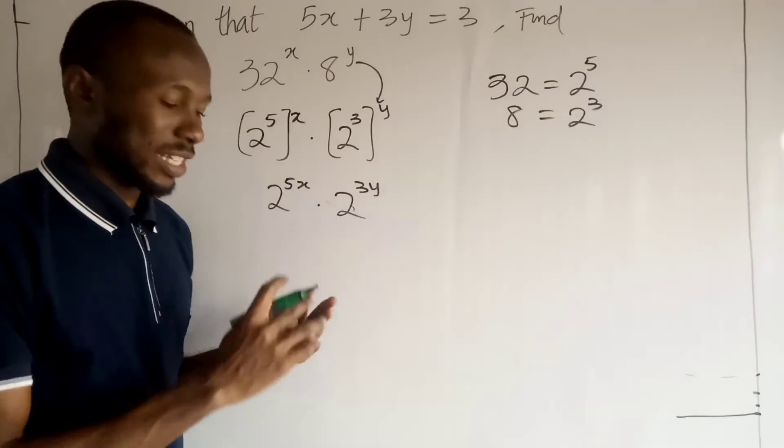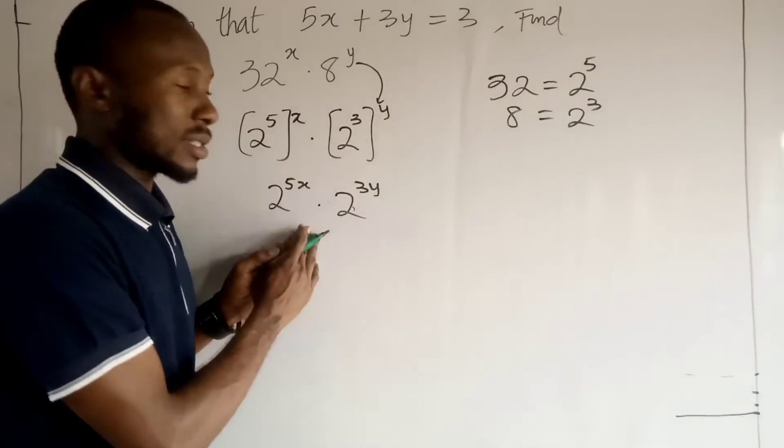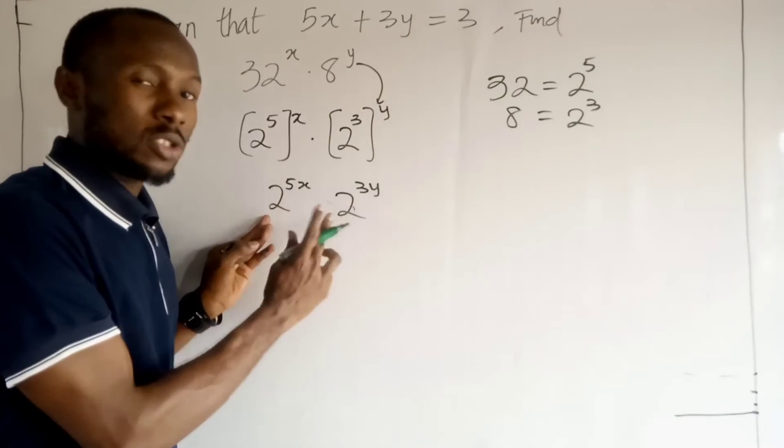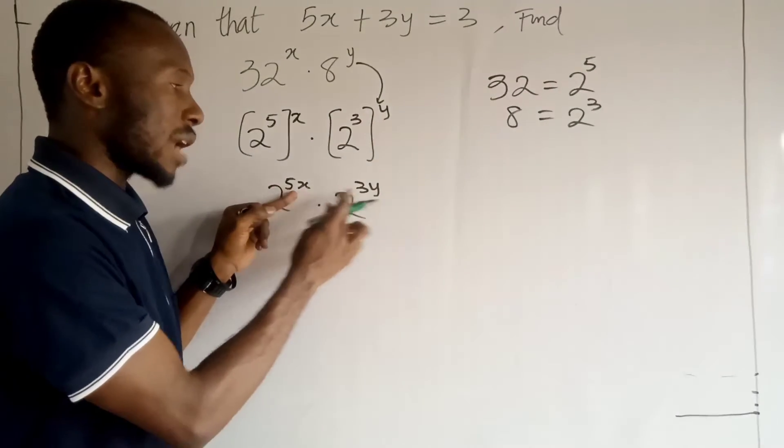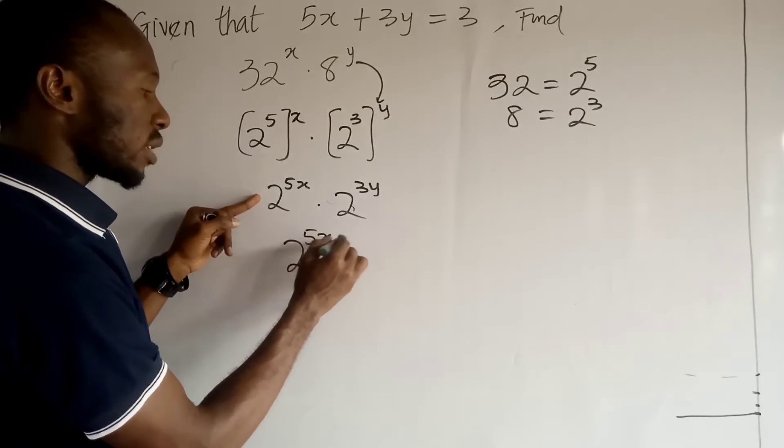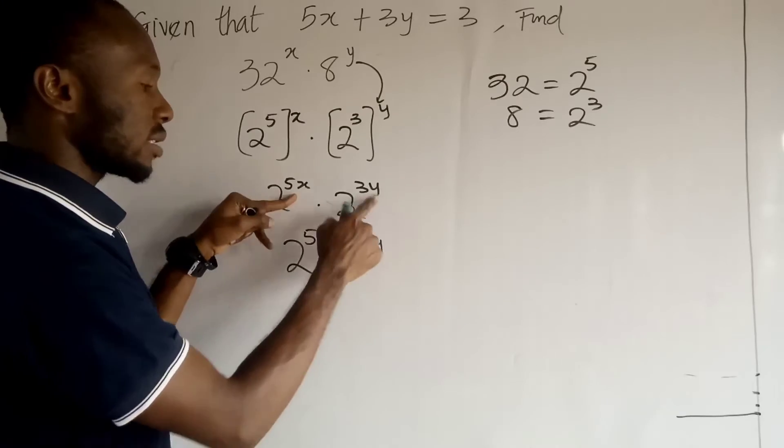I hope you've seen something already at this point. Now, remember from the laws of indices, when you have the same base multiplying, what you just do, you take one of the base and you add their exponents. So, these guys, I'll take one of the base and I'll add up the exponents. I'll add these guys.